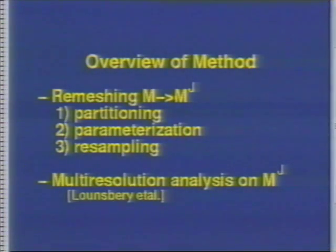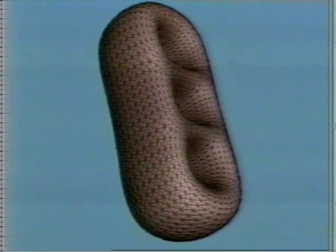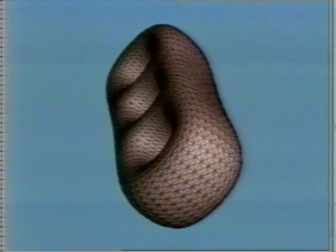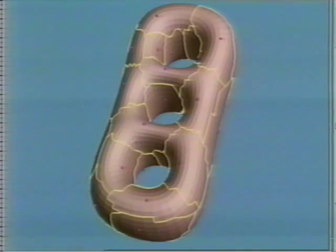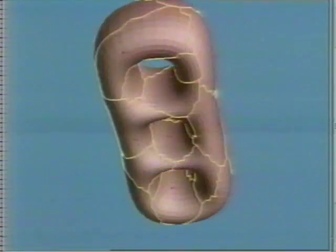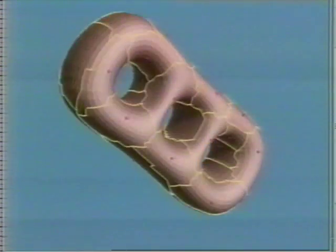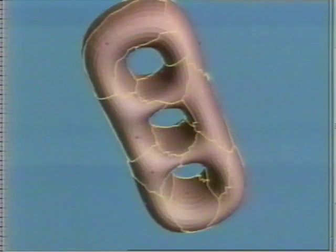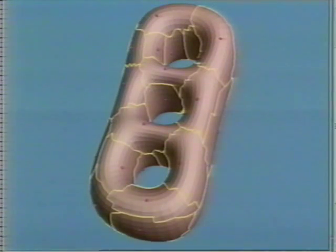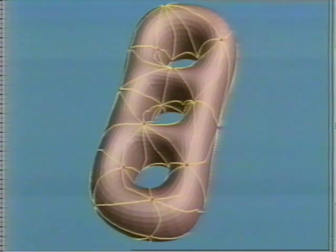Our remeshing algorithm consists of three steps: partitioning, parametrization, and resampling. In the first step, partitioning, we divide the surface into a set of triangular regions. Our method is based on the concepts of Voronoi diagrams and Delaunay triangulations. We first compute a Voronoi-like partition of the mesh from a set of sites, chosen carefully so that the dual to this partition forms a triangulation. Details of the site selection strategy are given in the paper. We then construct the dual to this graph and generate a set of triangular Delaunay-like tiles.